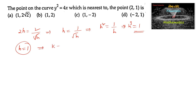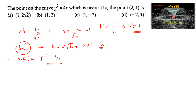So when h = 1, k = 2√h = 2√1 = 2. Therefore the point P(h, k) is (1, 2). So the answer is option B: the point nearest to (2, 1) on the curve y² = 4x is (1, 2).